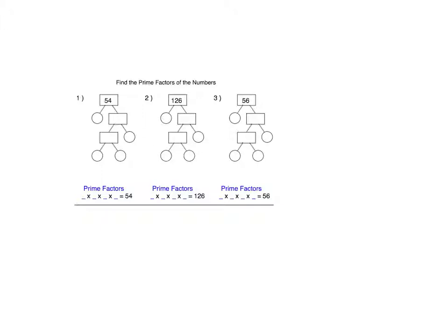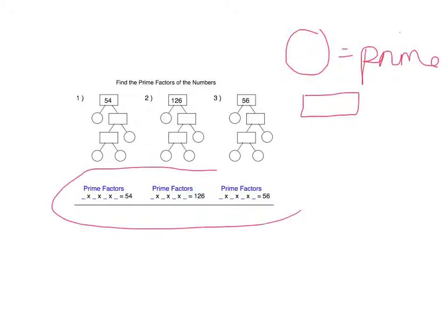Have a go at these examples in your book. This is quite a nice way to start because you know that in the circles you're going to need to put your prime numbers and your rectangles are going to be non-prime. Then have a go at writing your answers out like this at the bottom. When you're ready to work these out, press pause. When you finish, press play and the answers will be on the next page. You can then mark them. If they're right, carry on with the video. If you've got some problems, go and speak to your teacher.